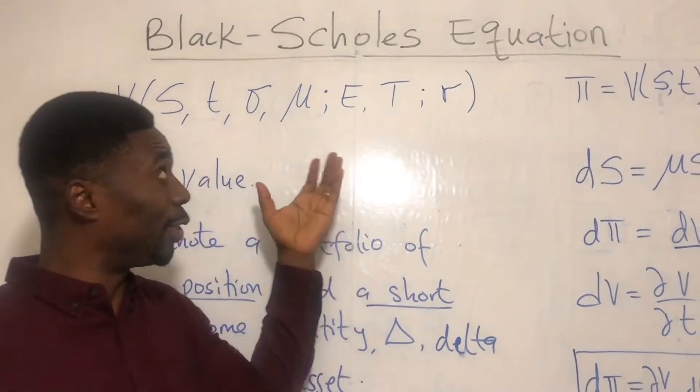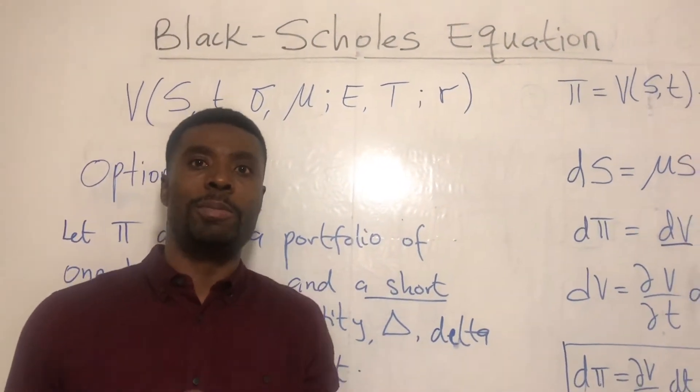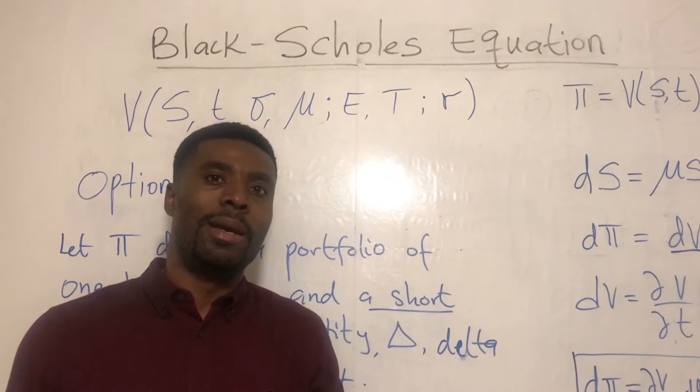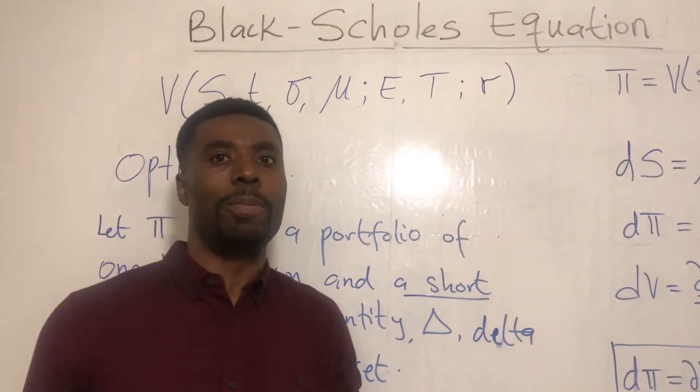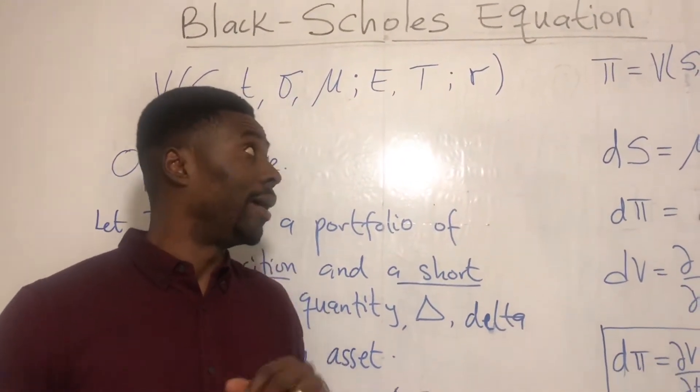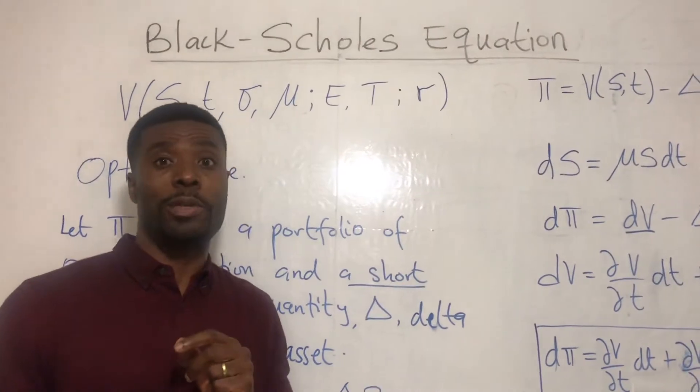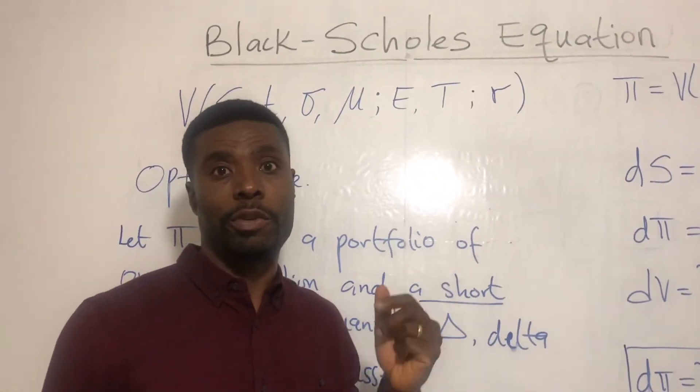The Black-Scholes equation derivation uses three key principles in finance. The first one is using the principle of no arbitrage opportunity. The second one is delta hedging. And the last one, very important, is Ito's lemma. So we're going to see these three in action in this video.